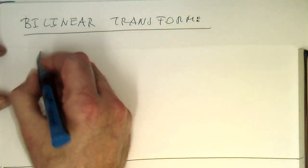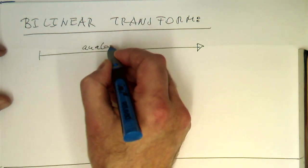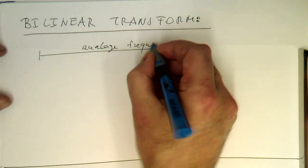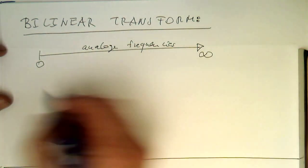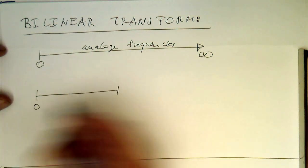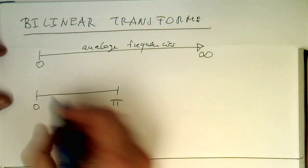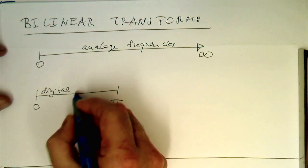So remember what the bilinear transform should be doing. These are our analog frequencies, ranging from zero to infinity. And now we've got our limited range of digital frequencies which are running from zero to pi. So these are our digital frequencies.